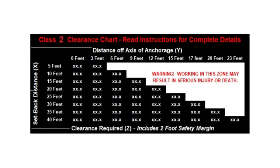For Class 2 SRD models, a fall clearance indicator table will be incorporated into the product labeling at or near the point of attachment to the full body harness. This will indicate the minimum fall clearance based on the position of the worker on the working surface.